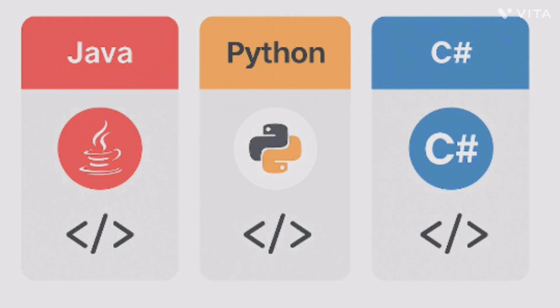Cognizant has divided the technical assessment into three clusters. Cluster 1 is the Java cluster — you will get two coding questions and must solve them using Java. The next is the Python cluster, which also gets two coding questions and Python is the only allowed language. The third cluster is C#, again two coding questions, and you need to solve them in C#.